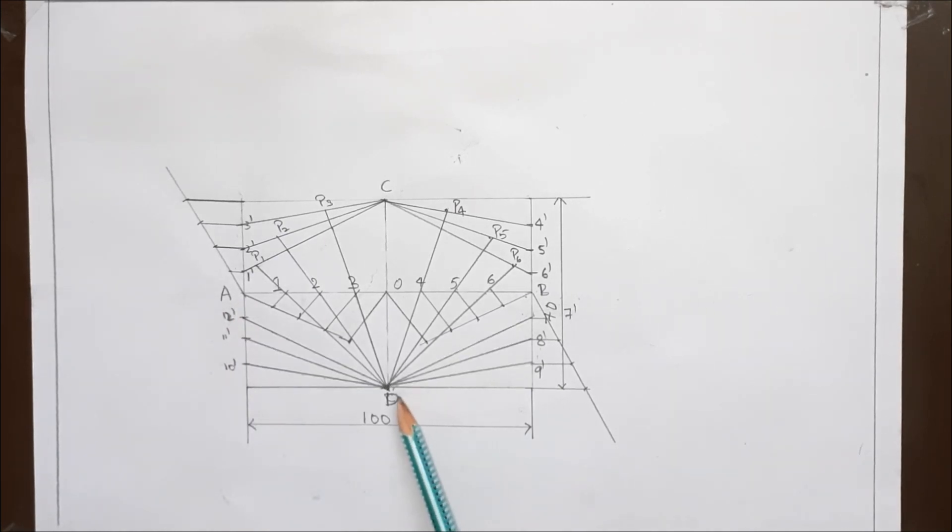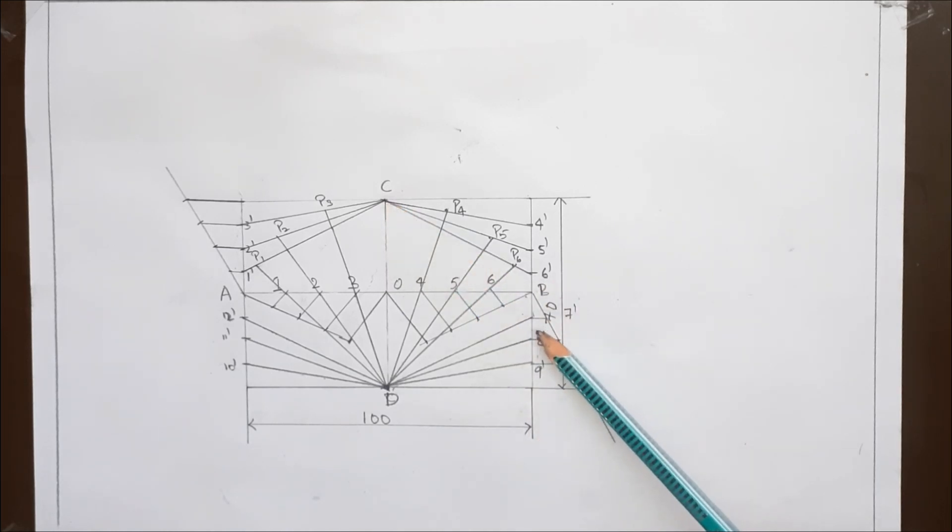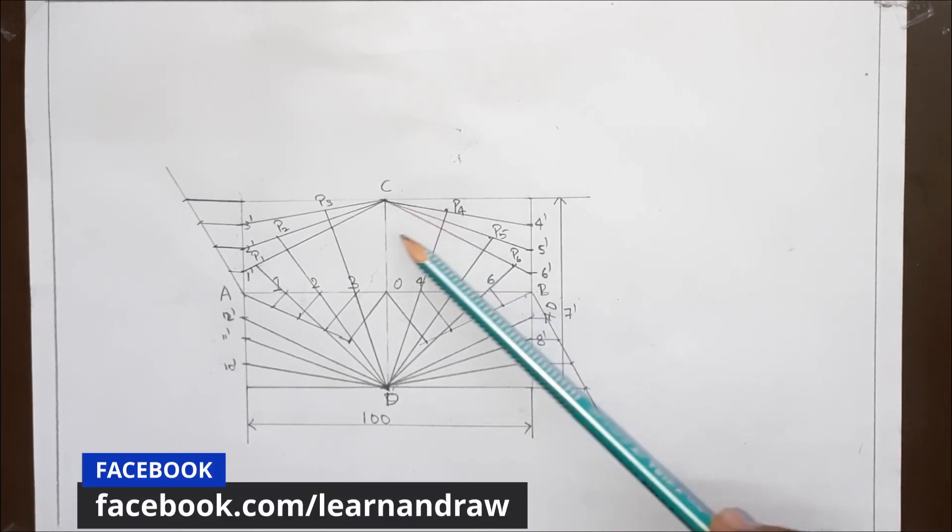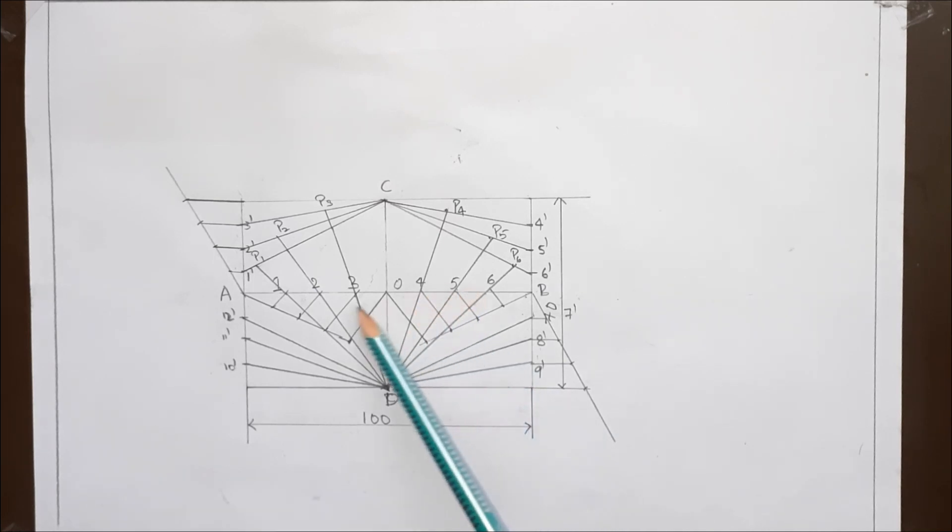Now after joining these points with D, let's join the point C with the line 7 dash, passing through the point 6. Similarly, join all the lines passing through the central points.